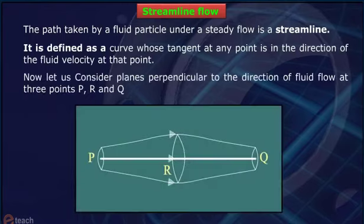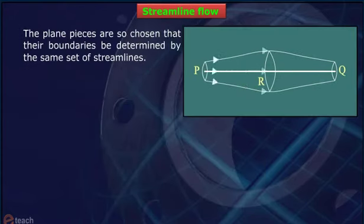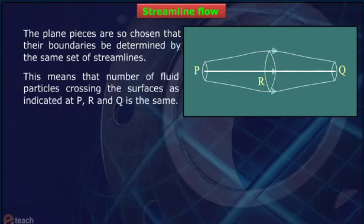Now let us consider planes perpendicular to the direction of fluid flow at three points P, R and Q. The plane pieces are so chosen that their boundaries be determined by the same set of streamlines. This means that number of fluid particles crossing the surface as indicated at P, R and Q is the same.